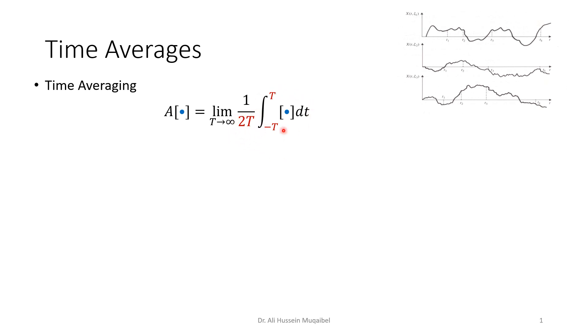The time average is defined as follows: you take one of the samples, a small x(t), so let's take this one. We're going to evaluate the average over time, so integrate from minus T to plus T and divide by the integration period, which is here 2T.